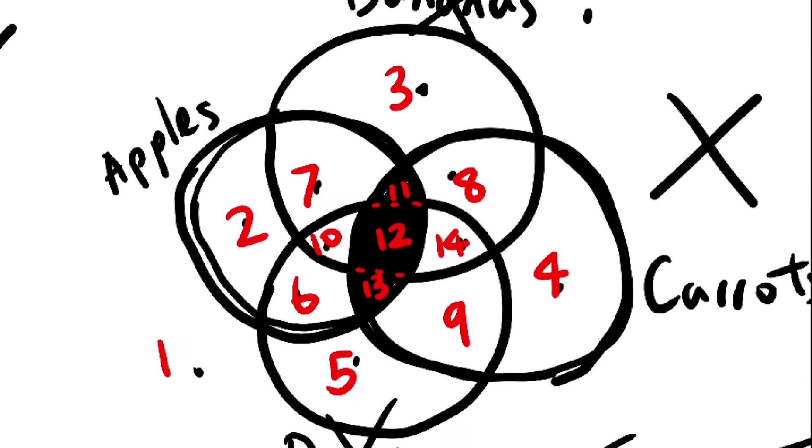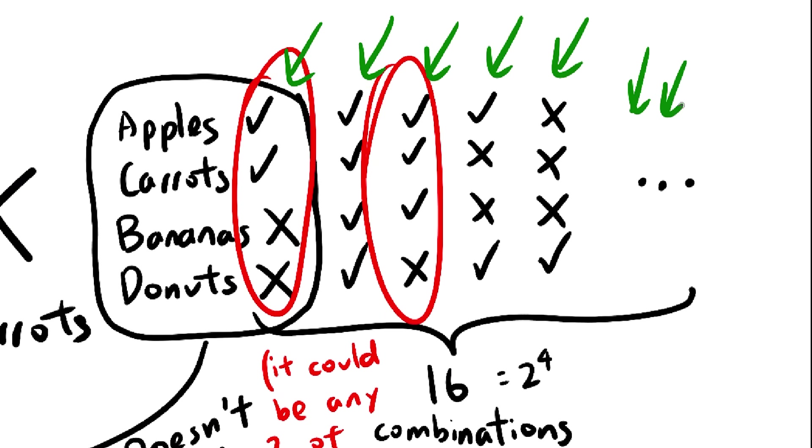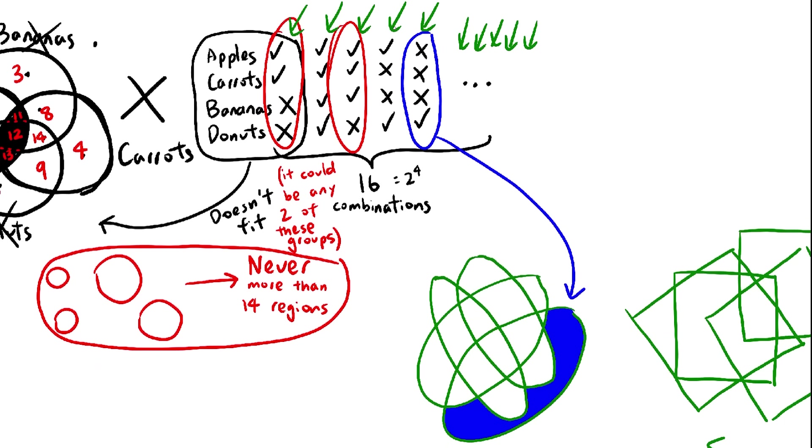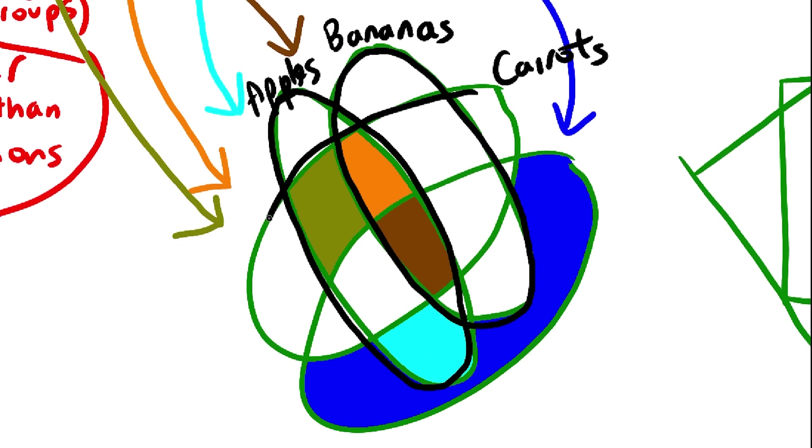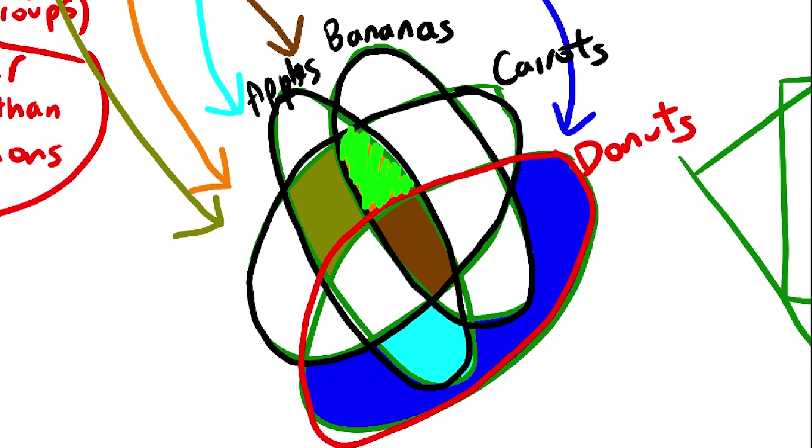Here are two examples, and notice they both use shapes that aren't circles. So why does this work, but this doesn't? Because, no matter what combination of these you are, there is a spot on this diagram for you. If you like apples, bananas, and carrots, but not donuts, this region describes you. And there's a region for every other combination as well.